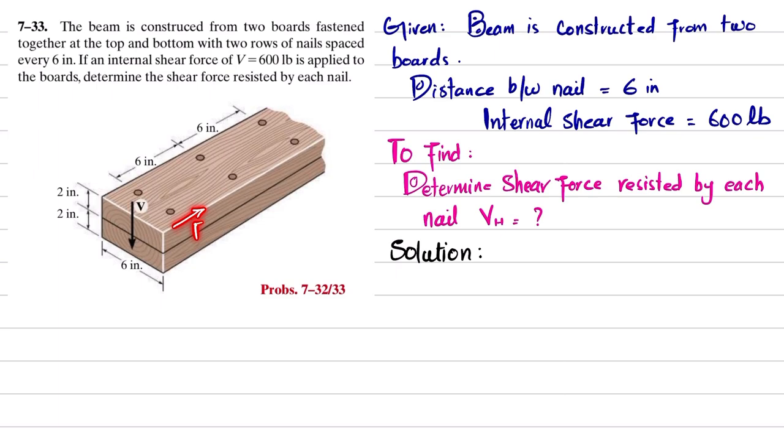So you have to find the horizontal shear force Vh that is resisted by each nail. Let's start with the solution. We know that shear flow, which is small q, is equal to V times Q divided by I.